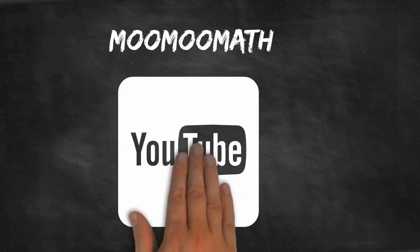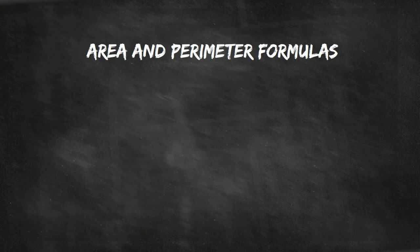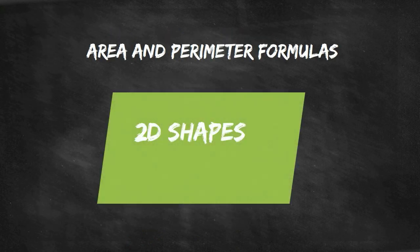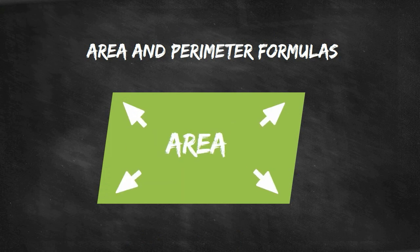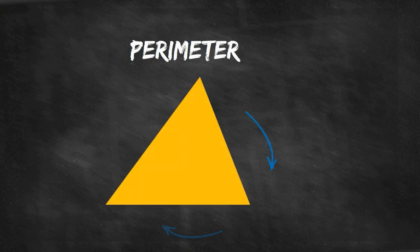Hello, welcome to MooMooMath where we upload a new math video every day. In this video I'd like to talk about the area and perimeter formulas of common geometric shapes. Area is the amount of space found inside a two-dimensional shape. The perimeter is the distance around a shape. The formula helps you calculate the area and the perimeter.